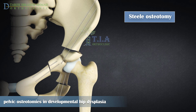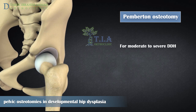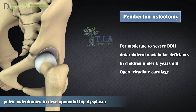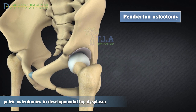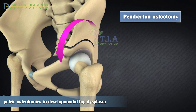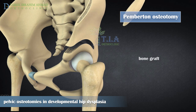Pemberton osteotomy is recommended for moderate to severe hip dysplasia in children under six years old with open triradiate cartilage. A bicortical iliac osteotomy starts just above the anterior inferior iliac spine and proceeds posteriorly to end at the level of the ilio-ischial limb of the triradiate cartilage. The osteotomy is curvilinear, parallel to and approximately one centimeter above the joint capsule.